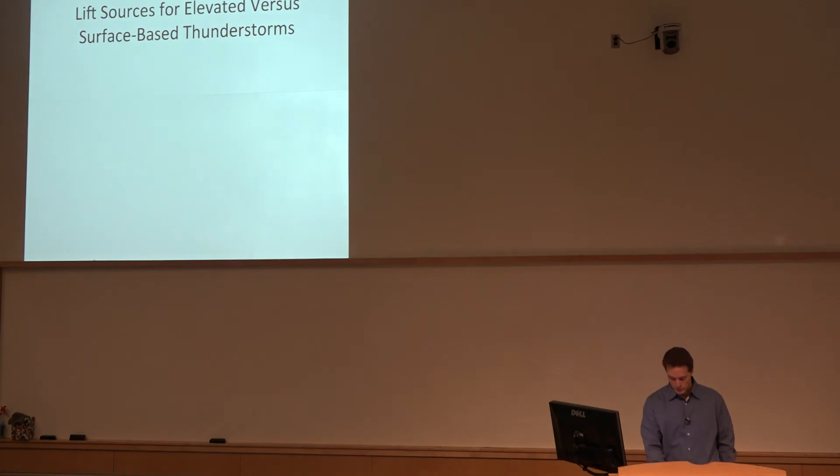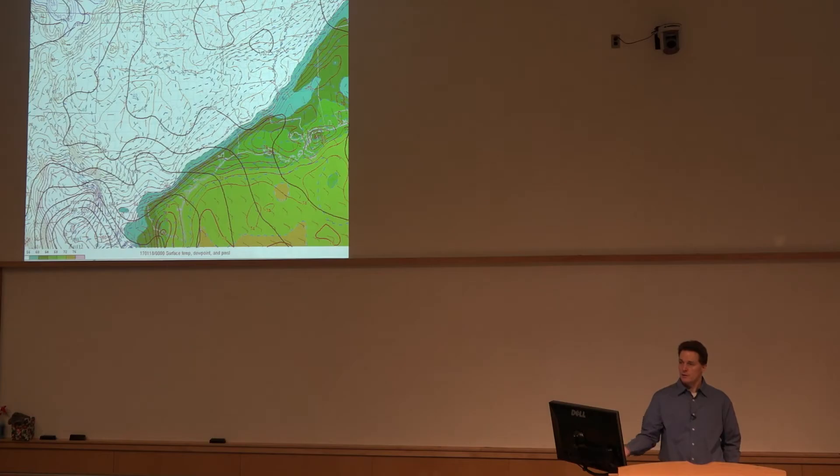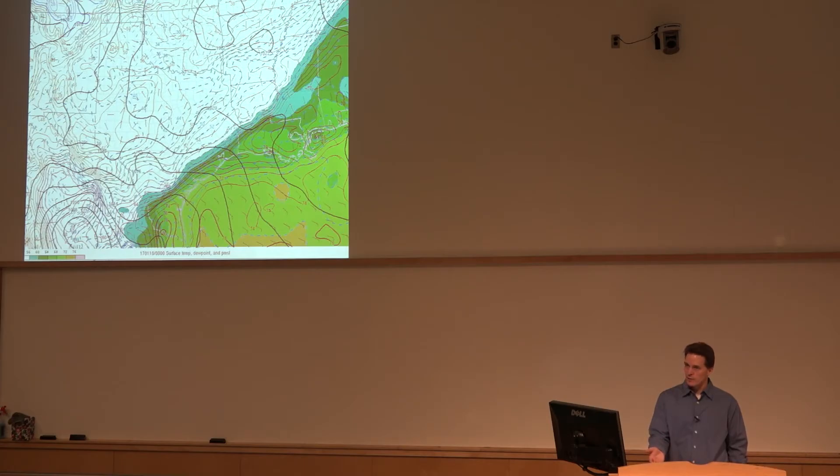Okay, so let's look for the lift sources for elevated storms versus surface-based storms. We'll show another case to show how it varies, and in this, the summary is usually it's the mesoscale boundaries related to the surface-based storms, and the QG processes are more relevant for elevated convection. So we've got a front, pretty well defined across South Texas. This is a fairly recent case, very moist, dew points in the upper 60s near 70 in South Texas, right along the wind shift.